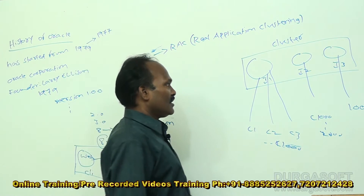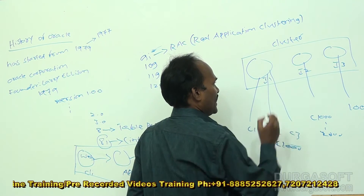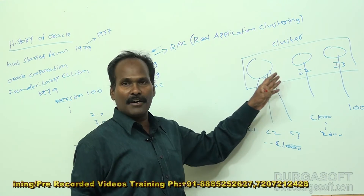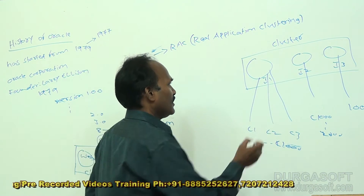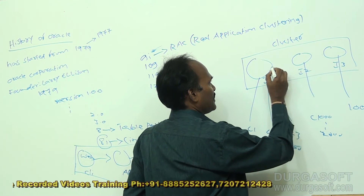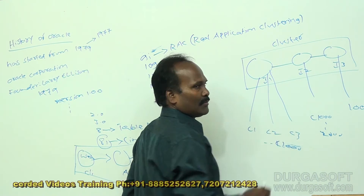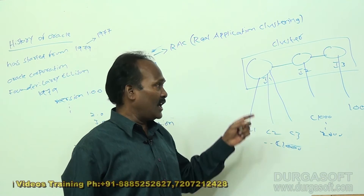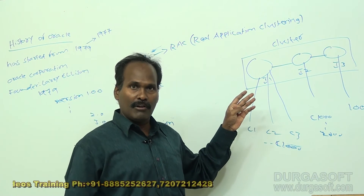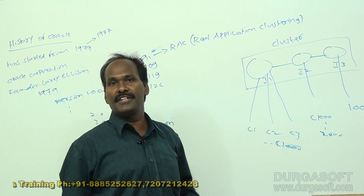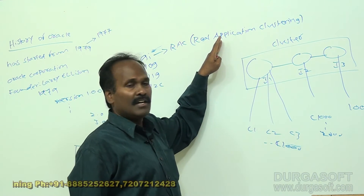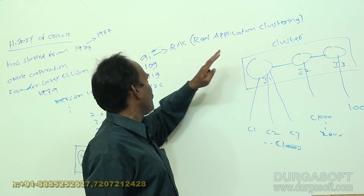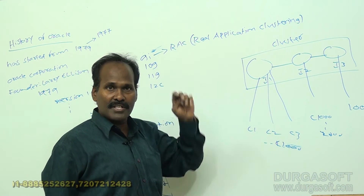In this case, whenever a particular server fails, automatically the failed server's workload is handed over to the next surviving instance. This type of concept is called Real Application Clustering, which was not present in earlier versions of Oracle.